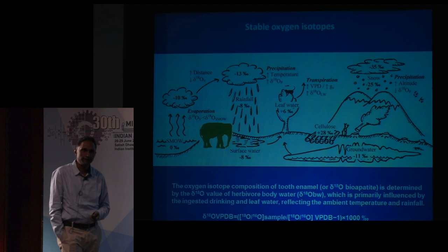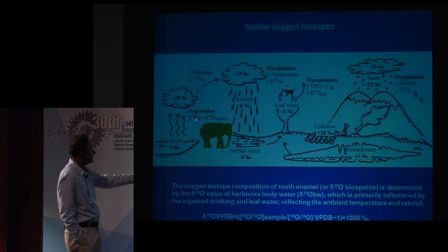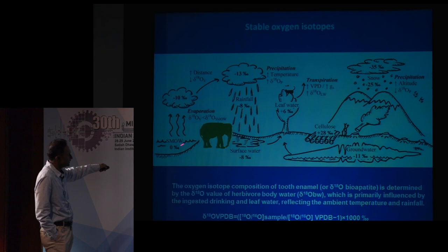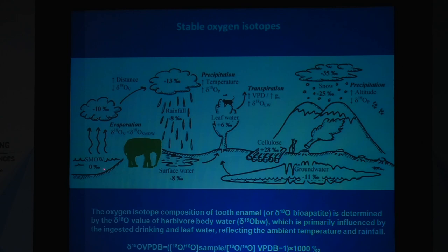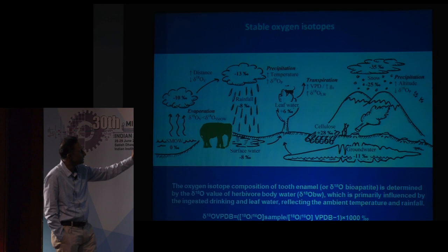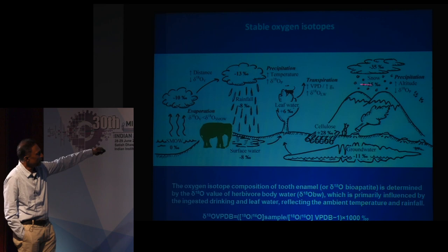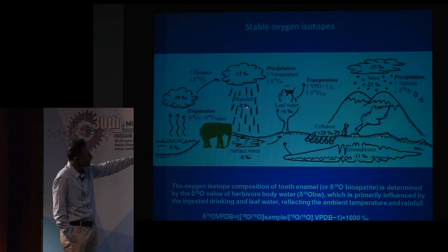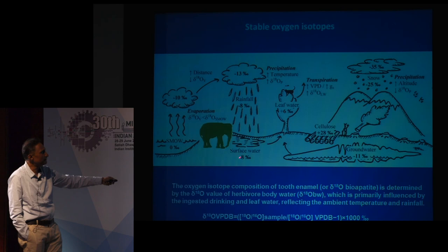Water behaves in a different manner — it depends upon temperature, precipitation, transpiration, and evaporation. We start with oceanic water at 0 per mil, and as evaporation takes place the cloud gets depleted in delta O18 because O18 is heavier and O16 is lighter. The ratio of delta O18 varies with altitude, temperature, and where the rainfall takes place.